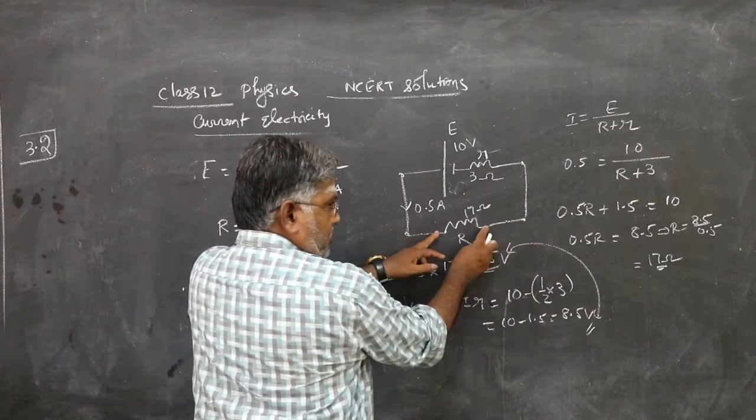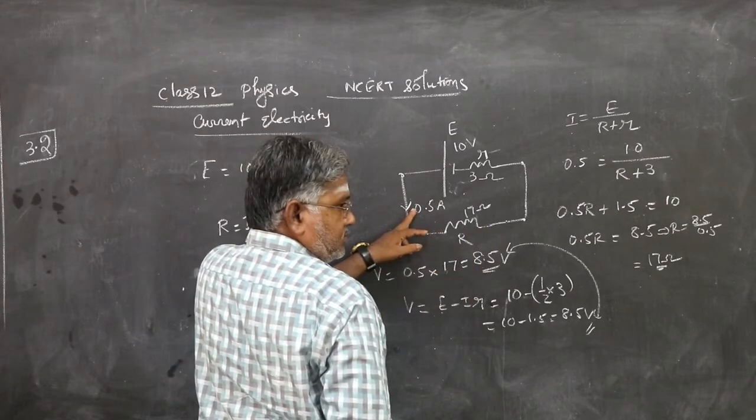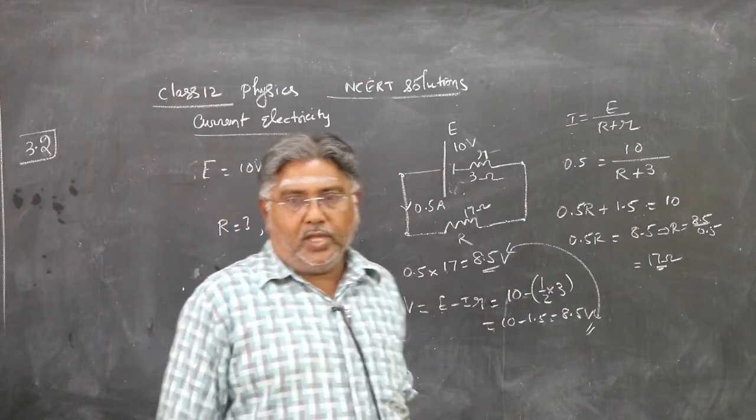I into capital R is terminal PD. Measure across this. I is 0.5. R you found to be 17 ohm. Use, you will get the answer.